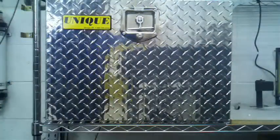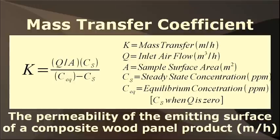ASTM D6007 requires that the samples remain in the chamber until a steady state formaldehyde concentration is reached, as determined by either a calculation based on the mass transfer coefficient of the material, or consecutive air samples that differ by no more than the error of the analytical method used.